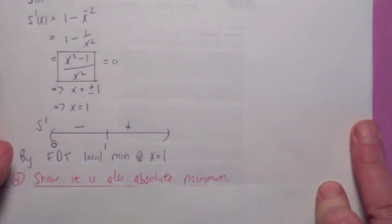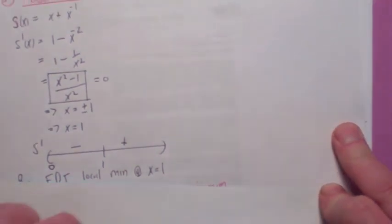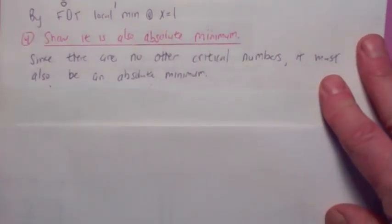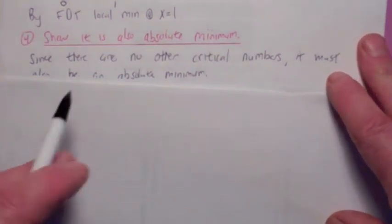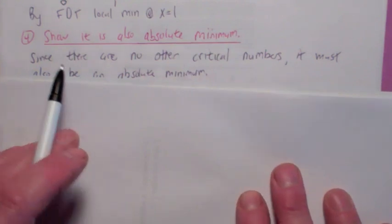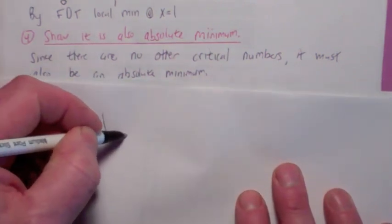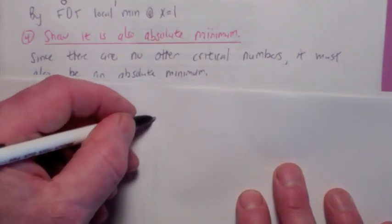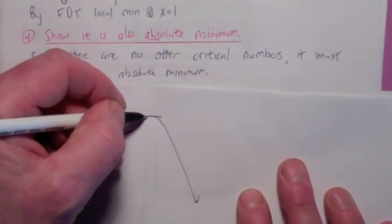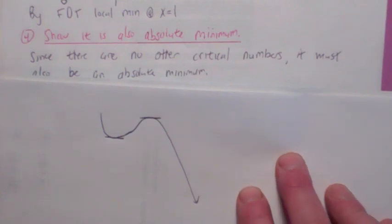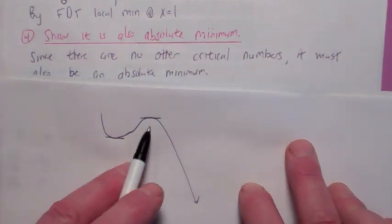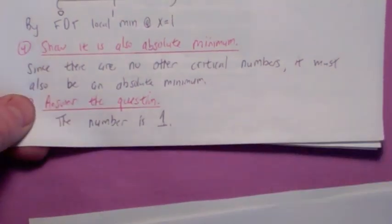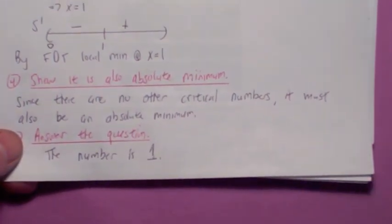Since s prime changes from negative to positive, there's a local minimum at x = 1. Now, why is it also an absolute minimum? Since there's no other critical numbers, the local minimum has to be an absolute minimum. If that's not an absolute minimum, wouldn't the function have to turn and then go down further? But if it turns, it would have to have another turning point, which means you have to have a critical number. So this proves that it's also an absolute minimum. The answer is the number is 1.